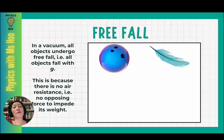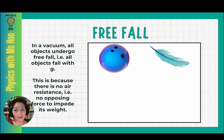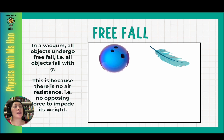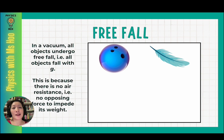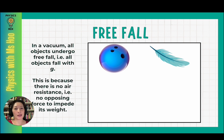Now let's go through what free fall is. A common misconception that a lot of people have — not just students but even adults who don't understand physics — is that the heavier object will fall down first compared to the lighter object. That is true sometimes when in air, but in a vacuum, both objects will actually fall together at the same rate. If placed in a vacuum, all objects undergo free fall, meaning all objects fall with gravitational acceleration: 9.8 or 9.81 meters per second squared.